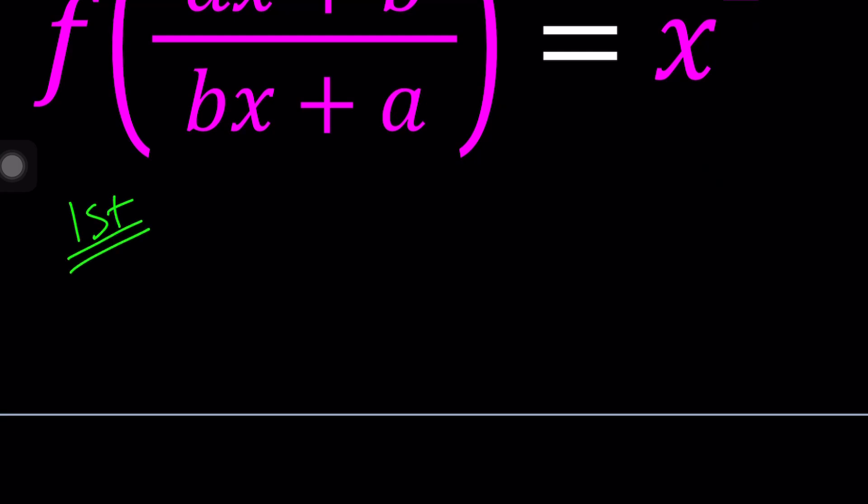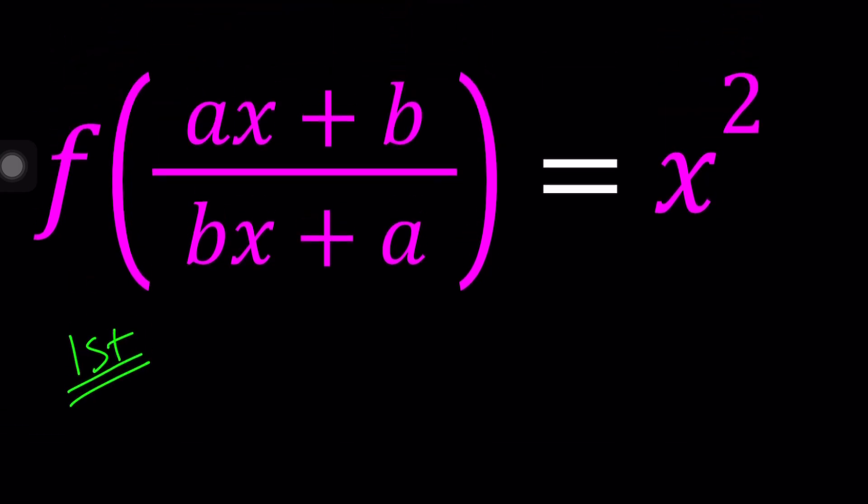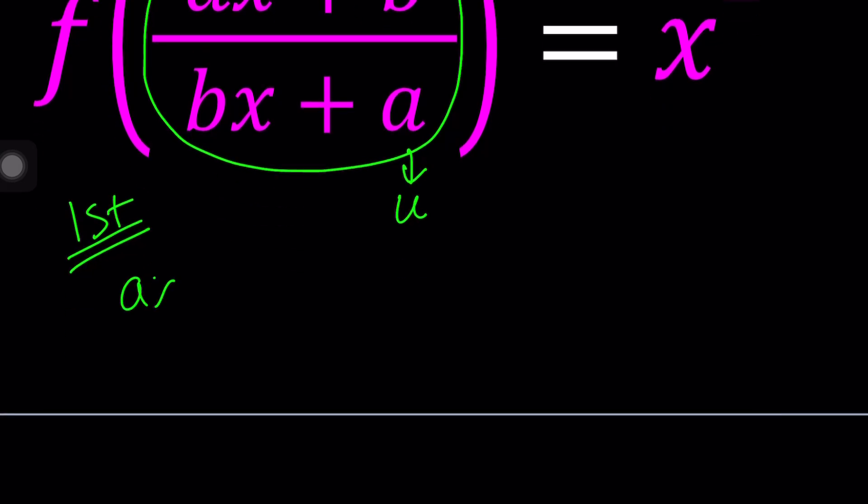So for my first method, I want to solve for f, so I want to get something like f of x. Let's go ahead and turn this complicated expression into something simple, like u. By setting it equal to u, I'm assuming that (ax+b)/(bx+a) is equal to u.